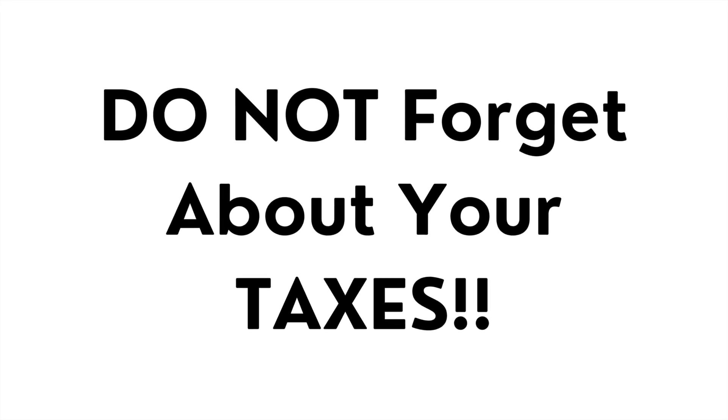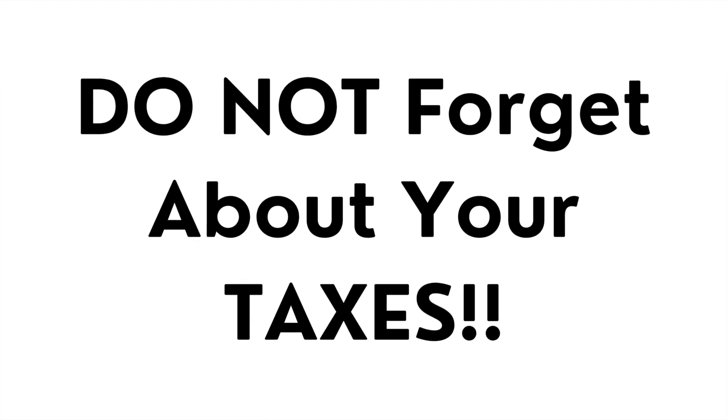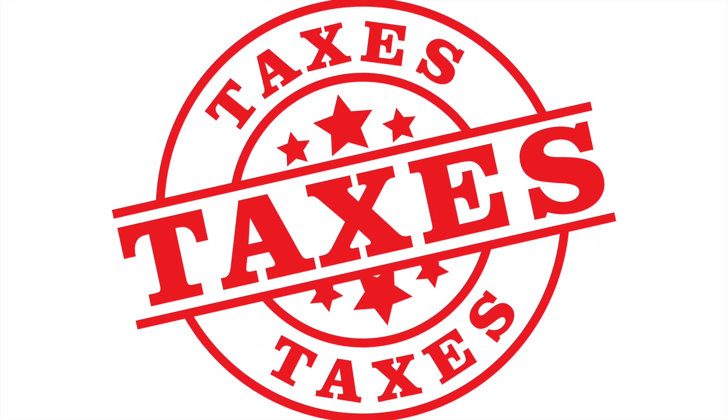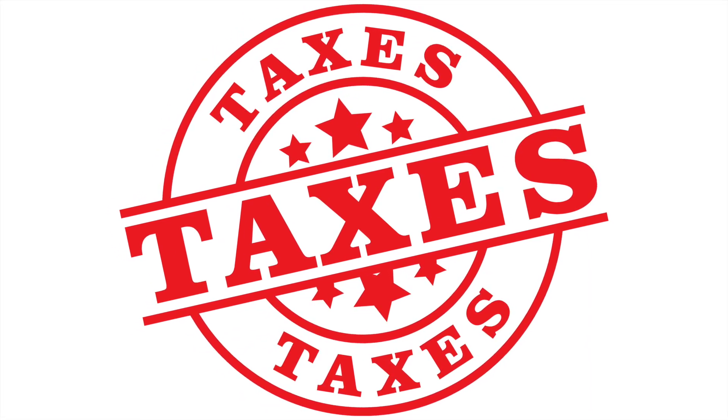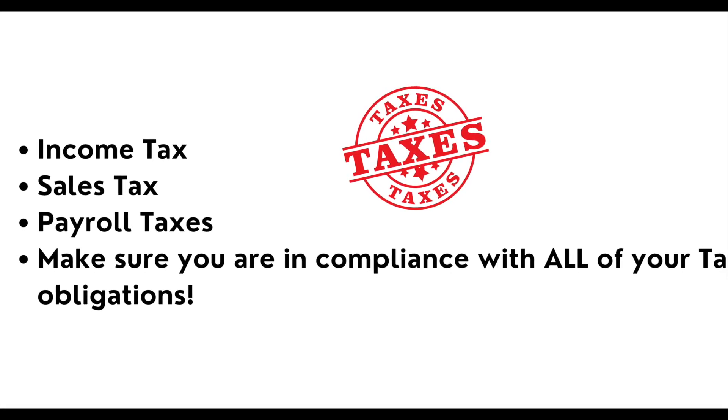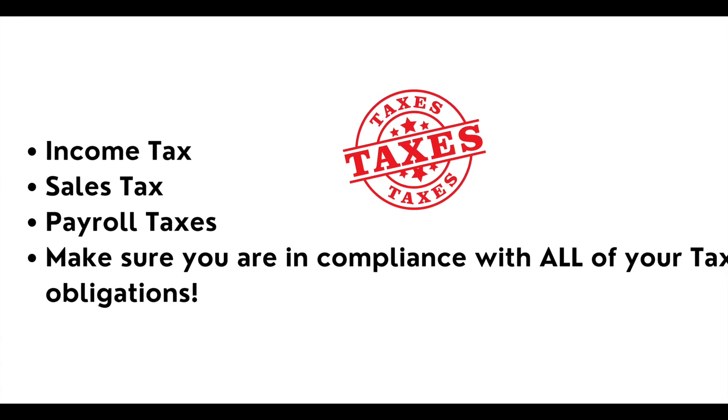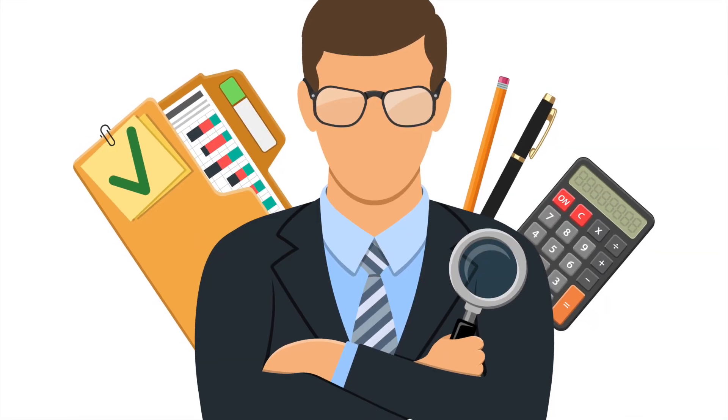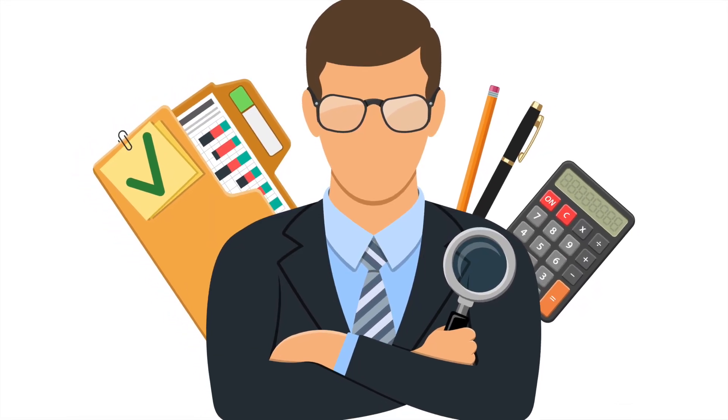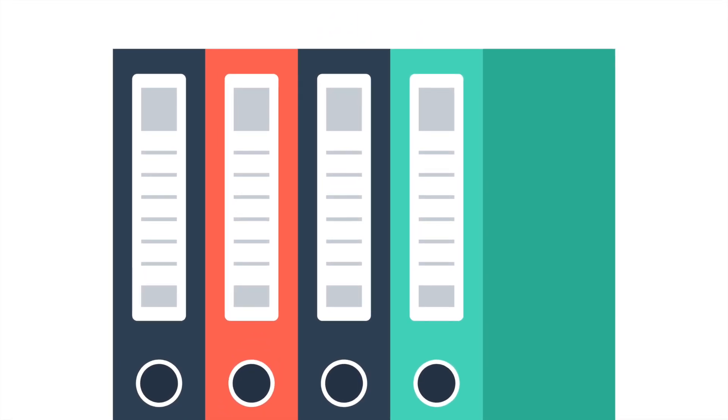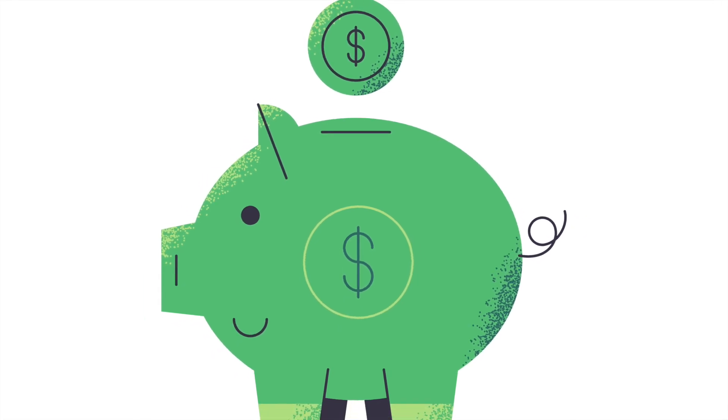And don't forget, one of the biggest things is taxes. Do not forget about your taxes. Familiarize yourself with your tax obligations, depending on your industry. There's all different kinds of taxes that you need to be aware of. Make sure that you're checking on income tax, sales tax, payroll taxes, covering all your bases, and making sure that you get set up, properly set up, and are in compliance with all of your tax obligations. And this is where a reliable accounting system and a reliable organization system really come into play. This is essential for keeping your finances in order.